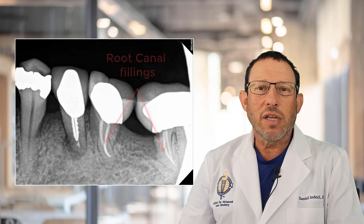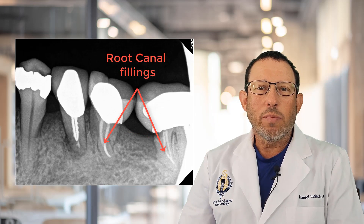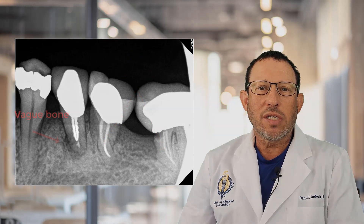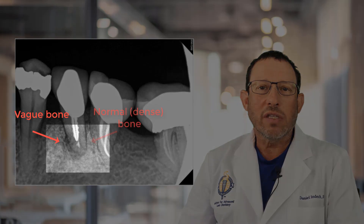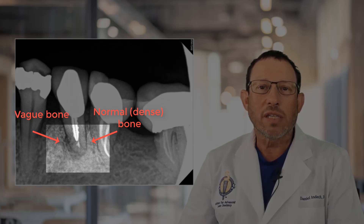These white fillings in the roots are root canal fills, and those are important to observe in that they are placed to heal the ends of the teeth. When we see areas of vague bone at the end of the teeth, we know that either the tooth requires a root canal treatment or the root canal treatment that's been done is not succeeding.